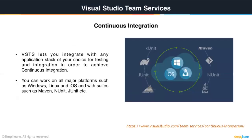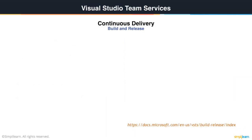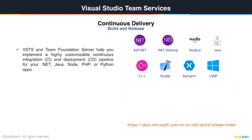Next in line is continuous integration. Visual Studio Team Services lets you integrate with any application stack of your choice for testing and integration. High performing teams practice continuous integration and continuous delivery. VSTS not only automates the build, testing, and deployment of your app, it gives you complete traceability to see everything in the build — including changes to your code, reviews, and test results. You can work on all major platforms such as Windows, Linux, and iOS, with suites like Maven, NUnit, and JUnit.